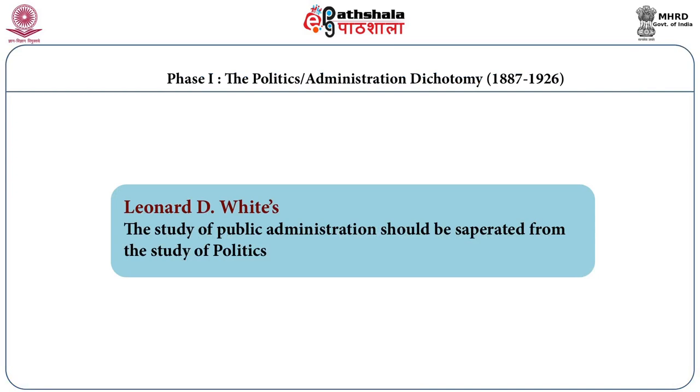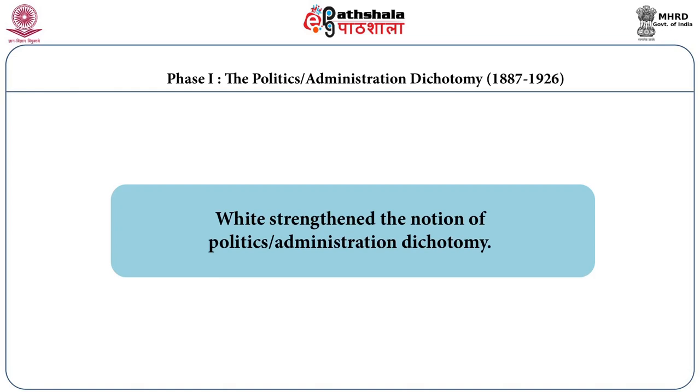There was also a person who supported the dichotomy: Frank Goodnow, in his book Politics and Administration in 1900, argued that politics is separate from administration. He said that politics deals with the policies or expression of the state will, while administration deals with the execution of those policies. He supported Wilson's dichotomy view, and during that time, America introduced several reforms regarding civil service and established departments of public administration in many universities.